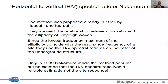Rayleigh waves are polarized in an elliptical way — the particle motion is elliptical, polarized on a plane radial to the direction of wave propagation. So the ratio between the horizontal and vertical motion is in some way a proxy related to the ellipticity: how much the motion is elliptical at each frequency in your spectrum. They showed that since the lowest maximum of this ellipticity coincides with the resonance frequency of the site, the H over V spectral ratio can be used as an indicator of underground structure.